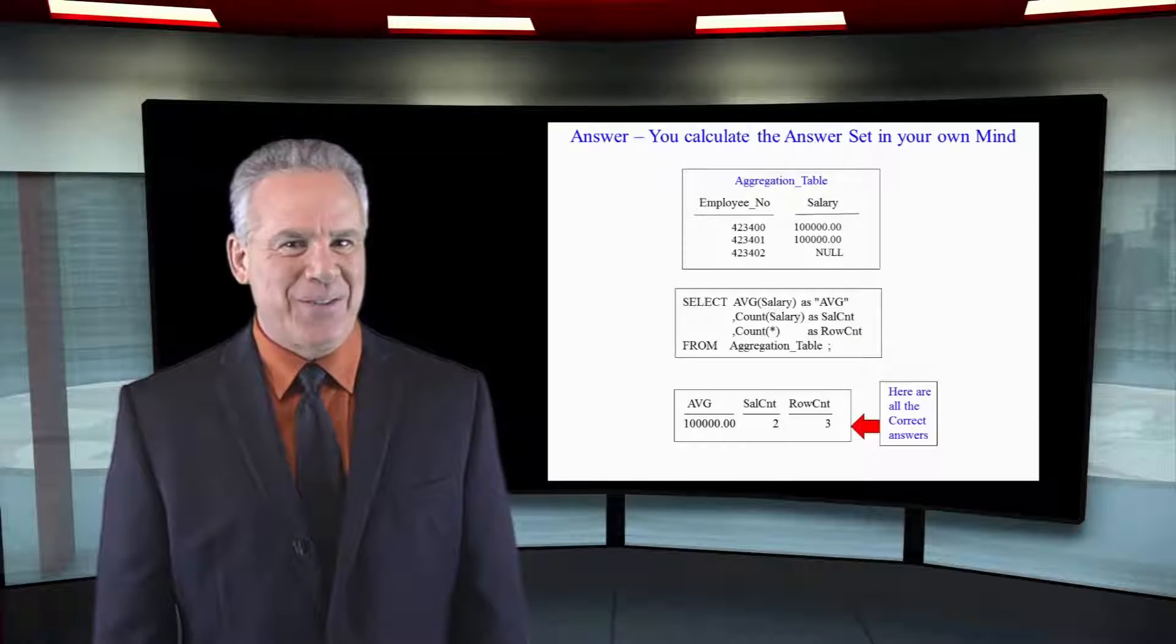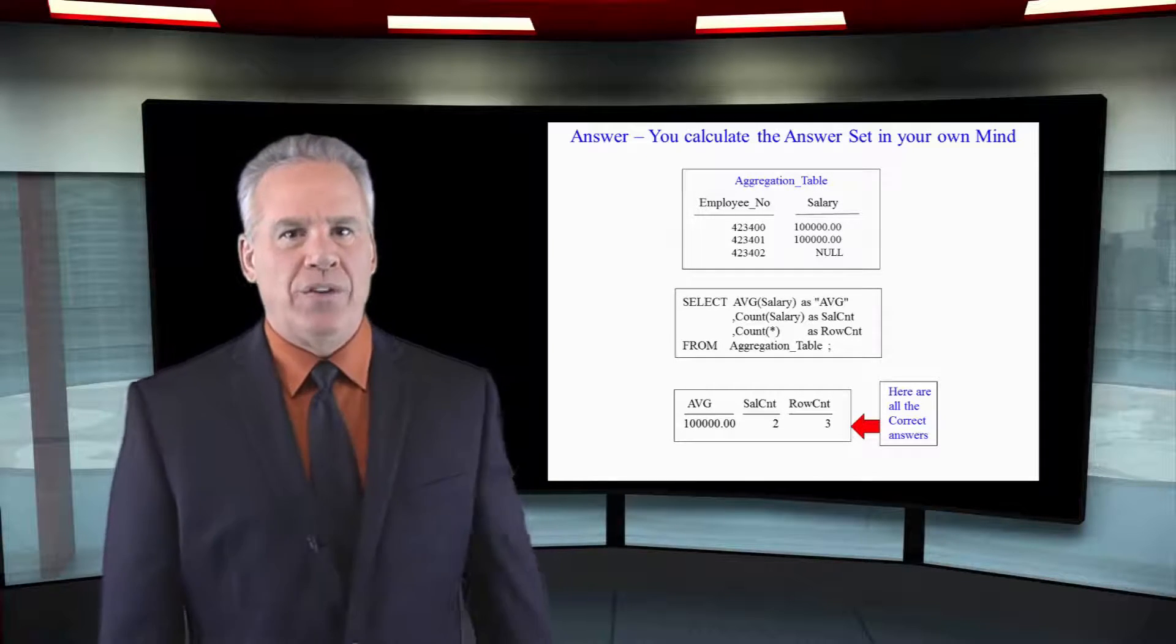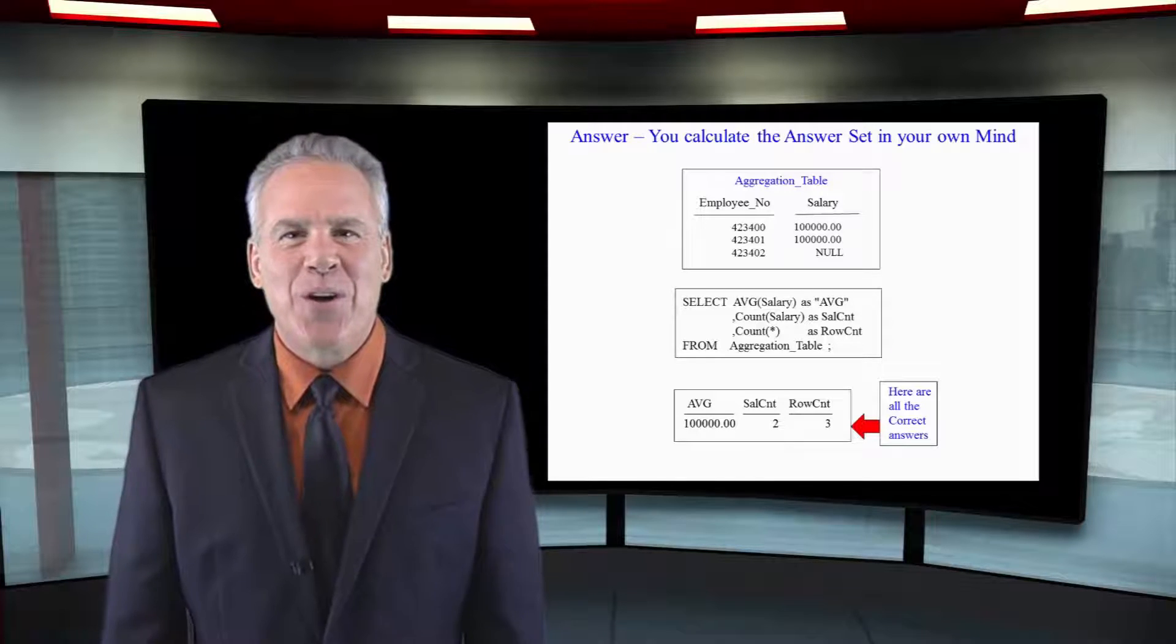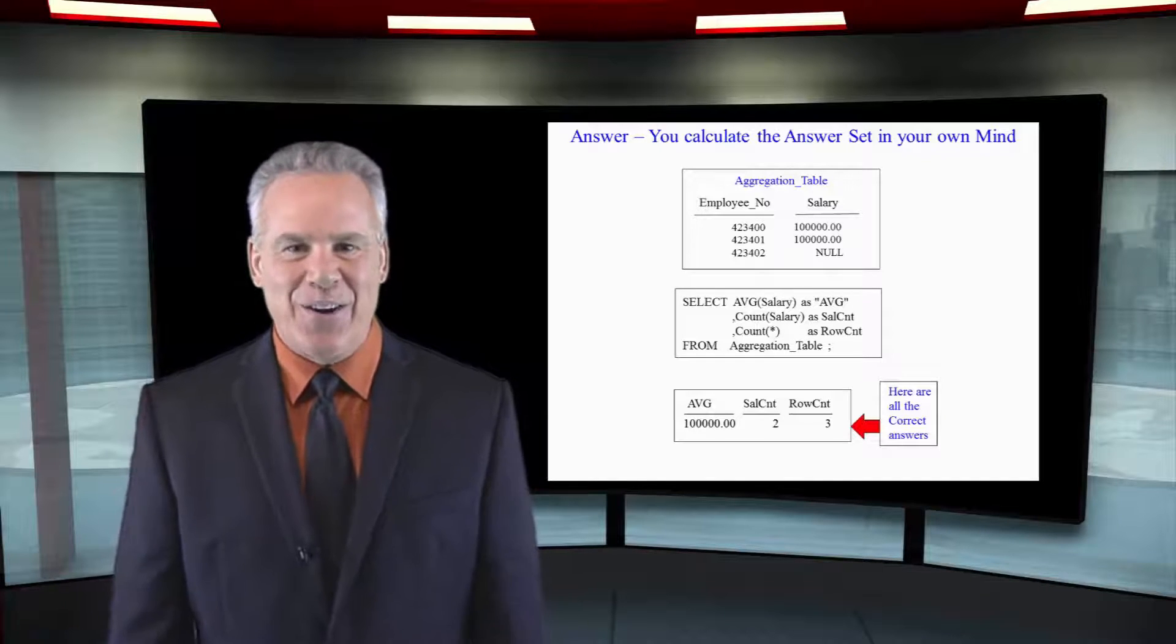Most people missed this question. I'll bet you nailed it. Now, we're about to learn rule one of aggregation: aggregates ignore null values. Talk to the hand. That's what the aggregation says to the null.